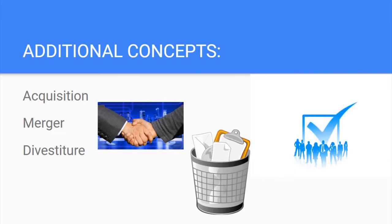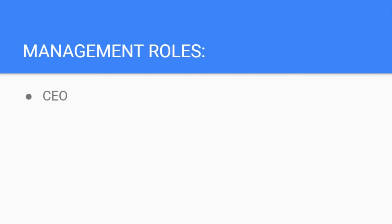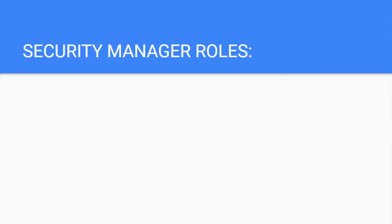Since most of Domain 1 has concepts that we're all familiar with, I won't spend a lot of time covering them in detail. Some security roles you should be familiar with that can push out security policy and decisions are senior management, such as the CEO (Chief Executive Officer), Chief Financial Officer, Chief Information Officer, Chief Operating Officer, Chief Information Security Officer, Chief Security Officer, and so on.